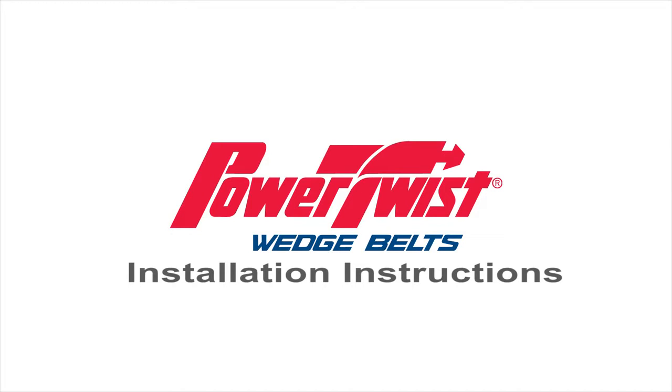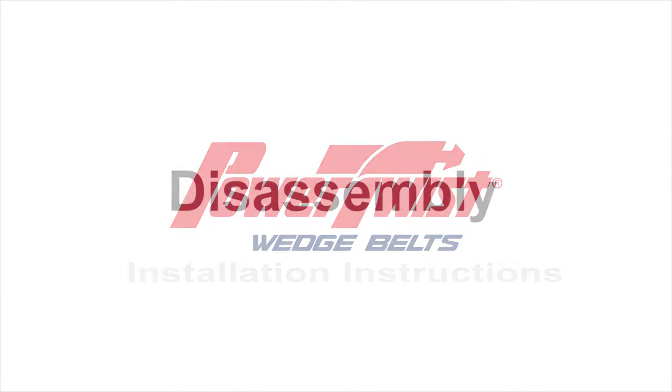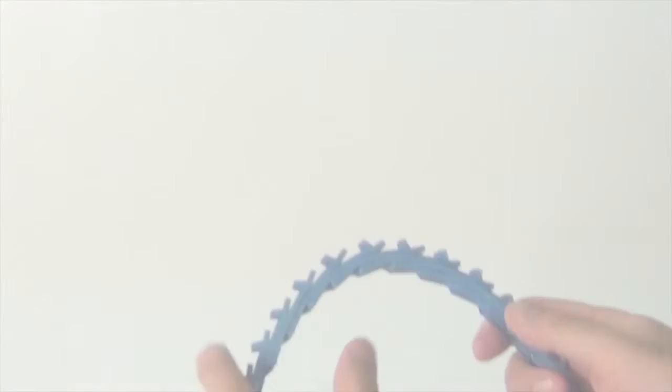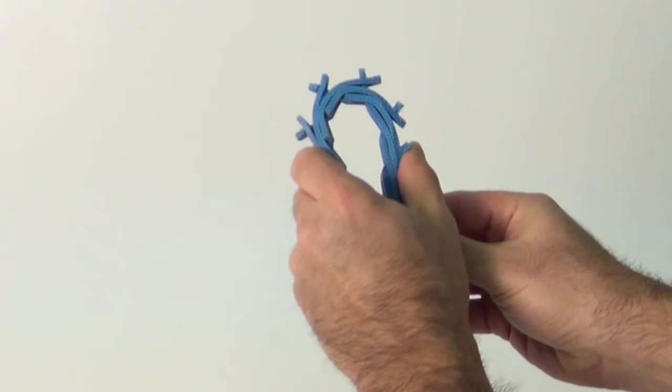Power Twist Wedge Belt Installation Instructions Disassembly. Hold belt upside down. With one hand, bend back as far as possible.